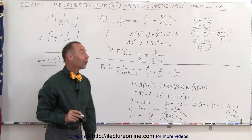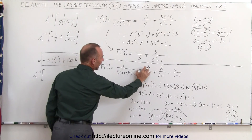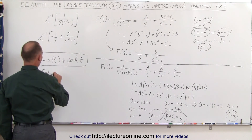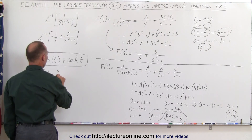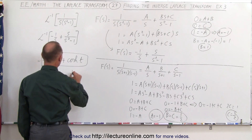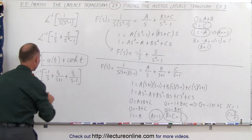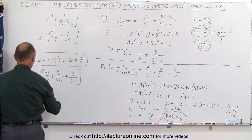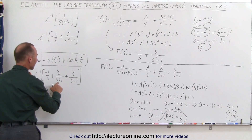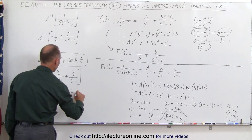Now we can take the inverse Laplace transform with a, b, and c replaced by their values. This gives the inverse transform of minus 1 over s, plus one half over s plus 1, plus one half over s minus 1. The result is minus u(t), plus one half times e to the minus t, plus one half times e to the plus t.